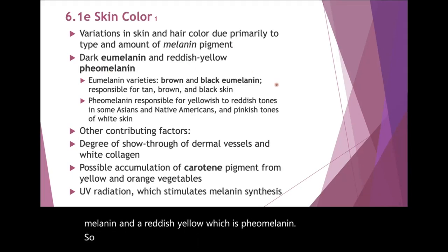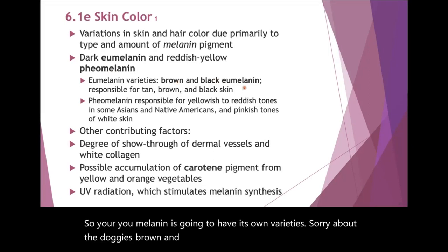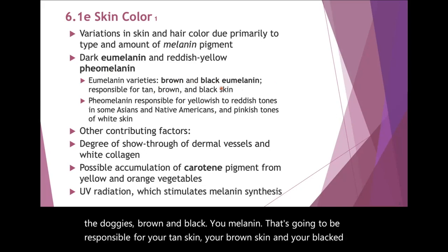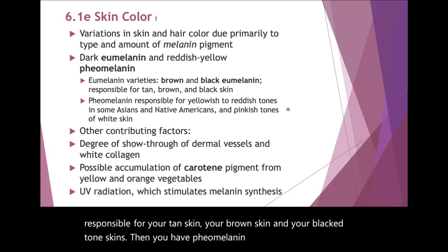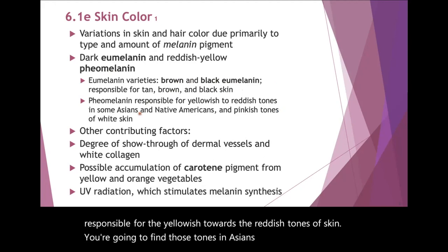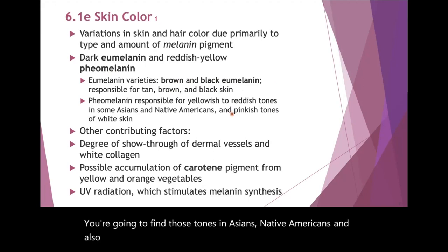Eumelanin is going to have its own varieties: brown and black eumelanin. That's going to be responsible for your tan skin, your brown skin, and your black-toned skins. Then you have pheomelanin, which is responsible for the yellowish towards reddish tones of skin. You're going to find those tones in Asians, Native Americans, and also responsible for the pinkish tones of white skin.